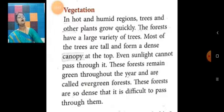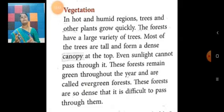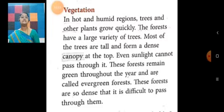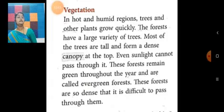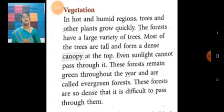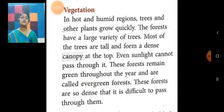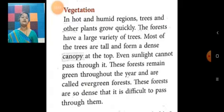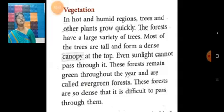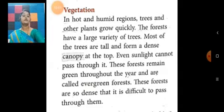Now let us talk about vegetation. In this hot and humid region, trees and other plants grow quickly. The forest has a large variety of trees. Most of the trees are tall and form a dense canopy — even sunlight cannot pass through it. These forests remain green throughout the year and are called evergreen forests. These forests are so dense that it is difficult to pass through them.